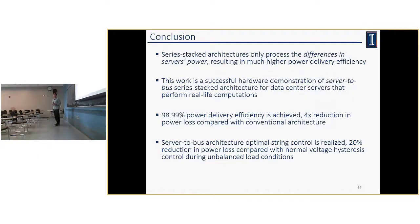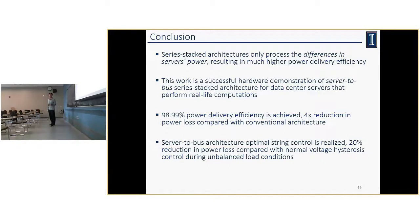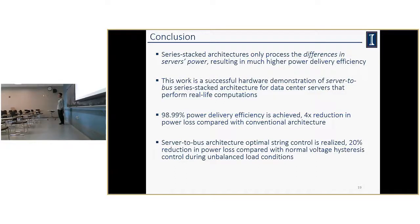In conclusion, the series stack architecture, since it only processes the difference in server power, can achieve much higher power delivery efficiency than conventional architecture. This work is a successful hardware demonstration of the server-to-bus series stack architecture for data center servers performing real-life computation. A power delivery efficiency of 98.99% is achieved — a four times reduction in power loss compared to conventional architecture. The optimal string current control achieves a 20% reduction in power loss compared to voltage hysteresis control during unbalanced load scenarios. Thank you.